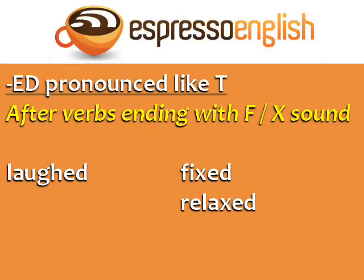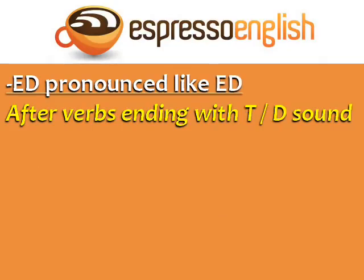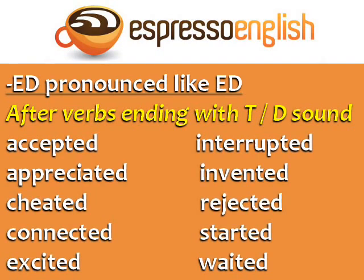The second pronunciation of ED is like ED with an extra syllable, after verbs ending with a T or D sound. Accepted, appreciated, cheated.